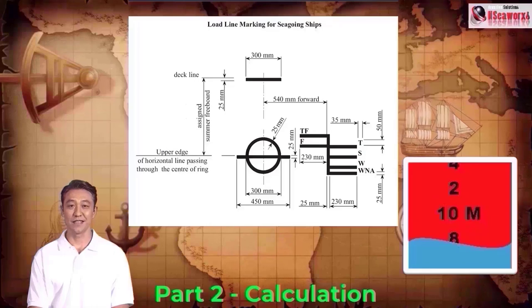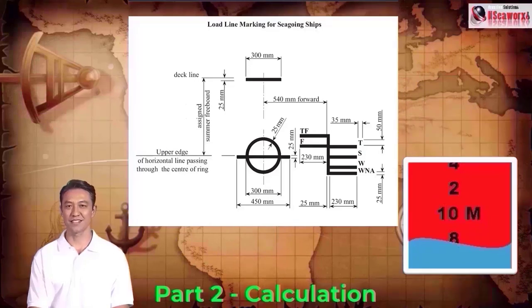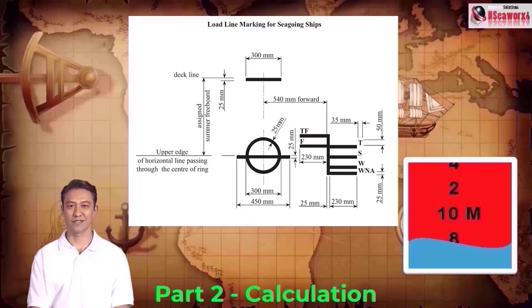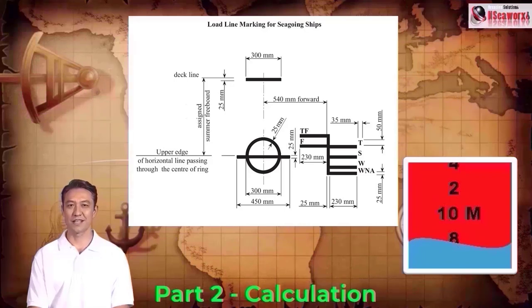Let's begin. Part 2 contains the procedures and calculation processes. This includes formulas with abbreviated signs, letters, and symbols. Note: abbreviations may differ on some ships, but generally they have the same usage and approach.